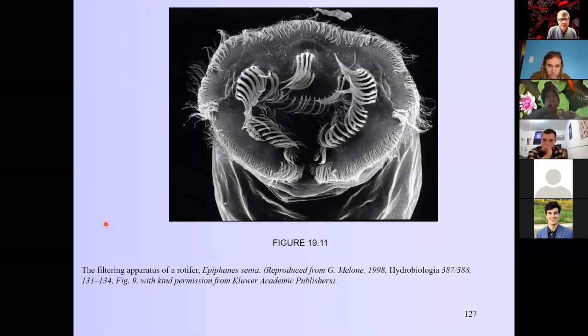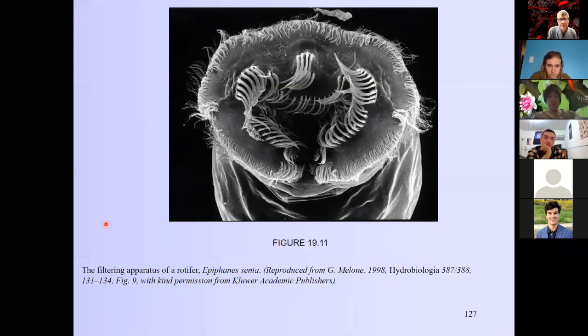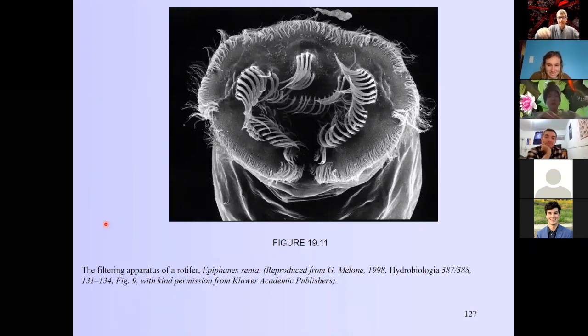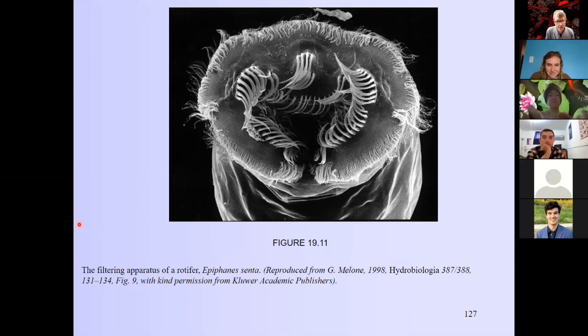For fun — this is the filtering apparatus of a rotifer. If you were a small alga, this would be terrifying: those cilia spin water around, you get stuck, and you go into the mouth.